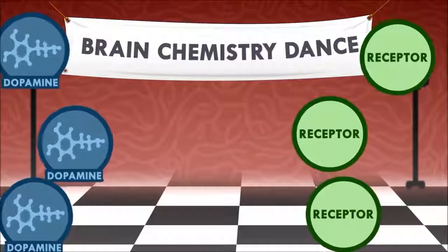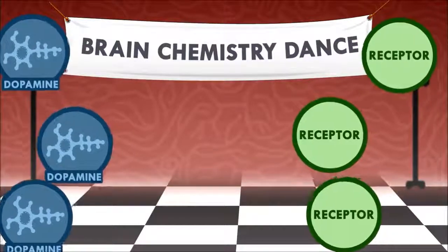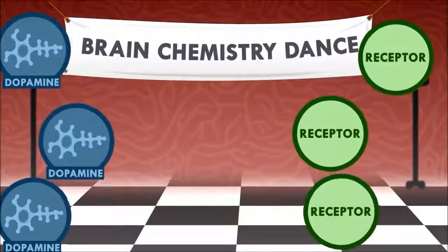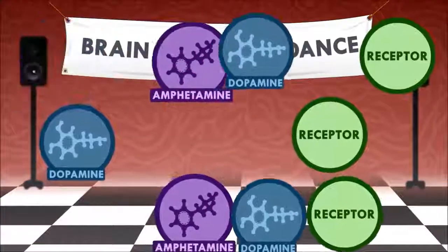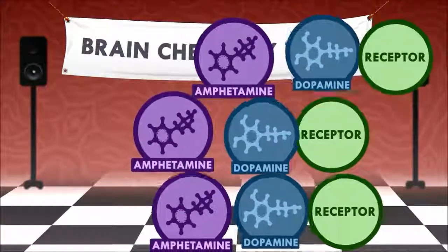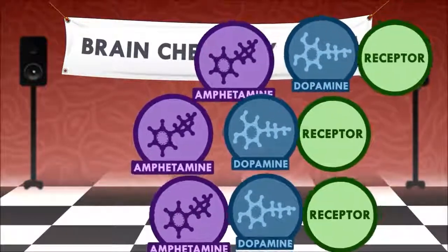Nerve cells and neurotransmitters act like they're at a middle school dance. Neurotransmitters like dopamine are on one side of the gym and receptor cells sit on the other. Amphetamine starts the party by pushing dopamine out onto the dance floor, where they then partner up with the receptors. Amphetamine also keeps dopamine on the dance floor, leaving more for the receptors to catch.